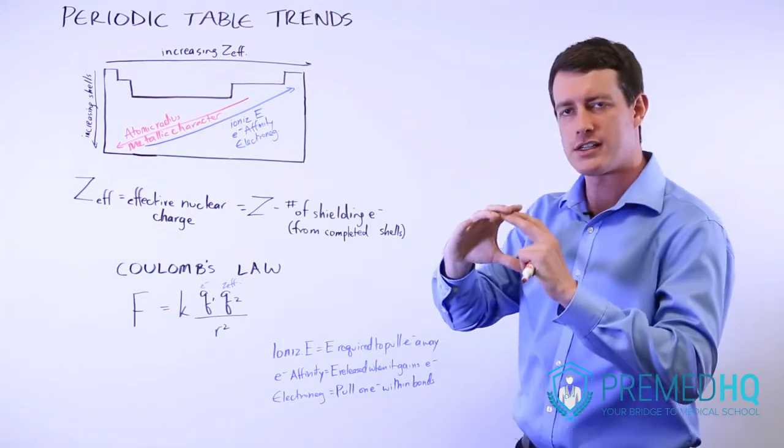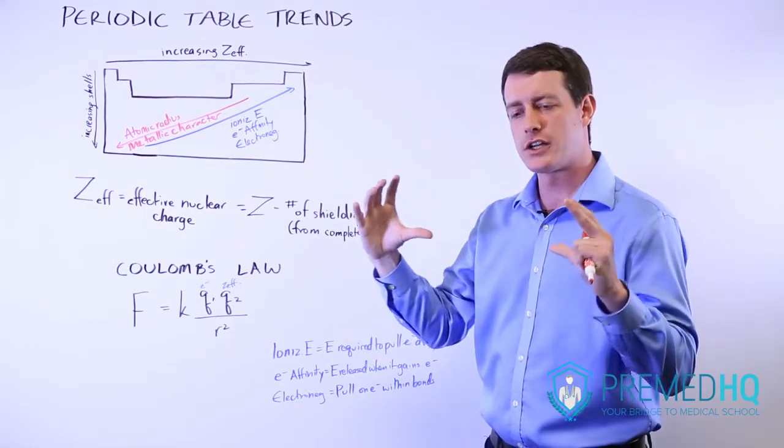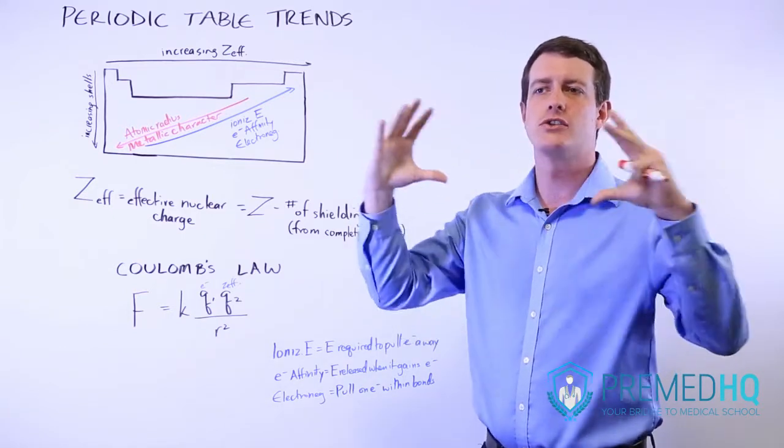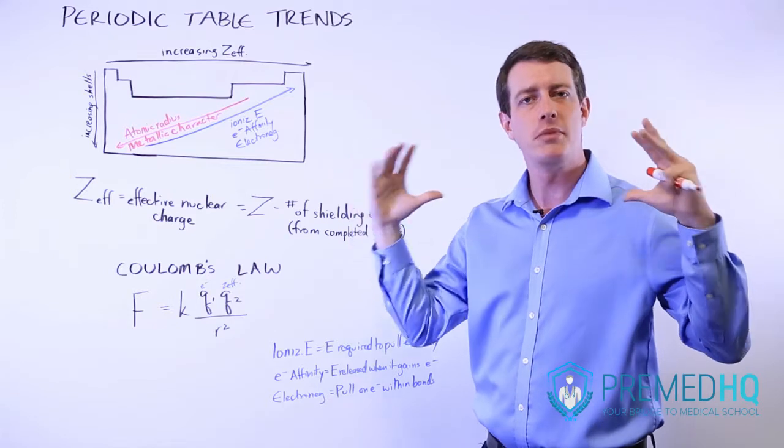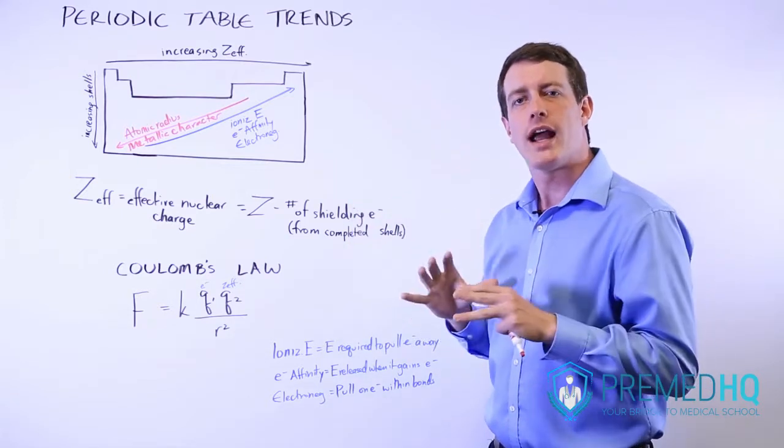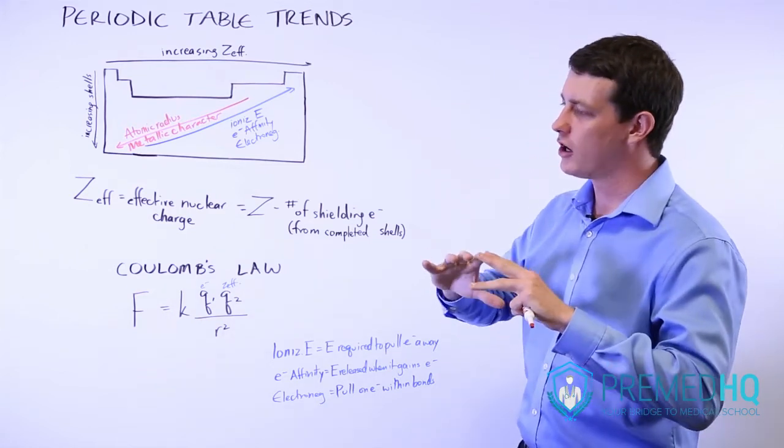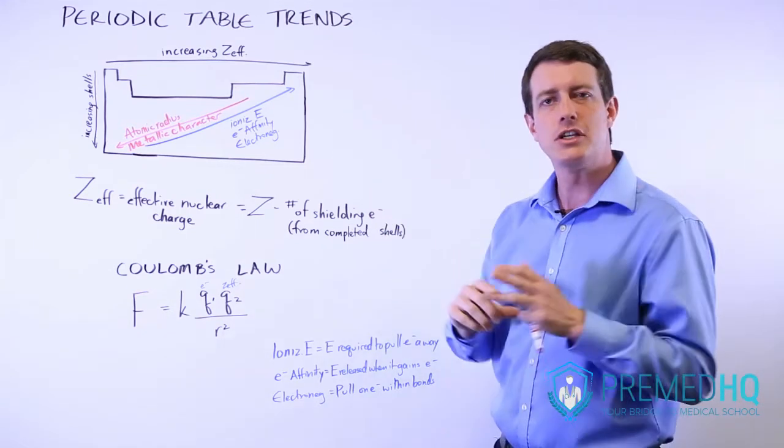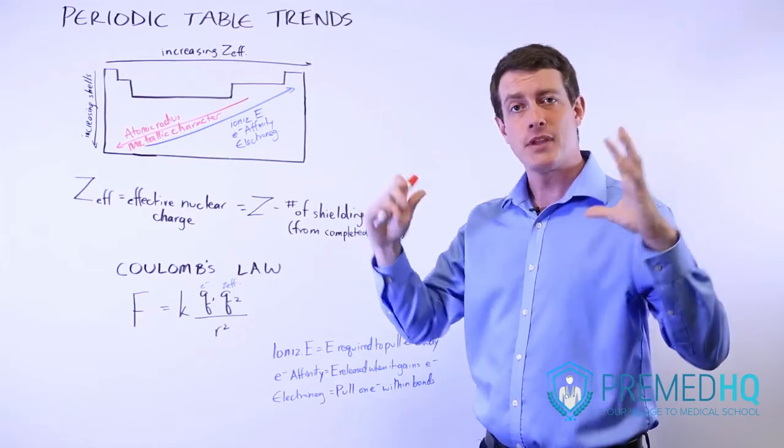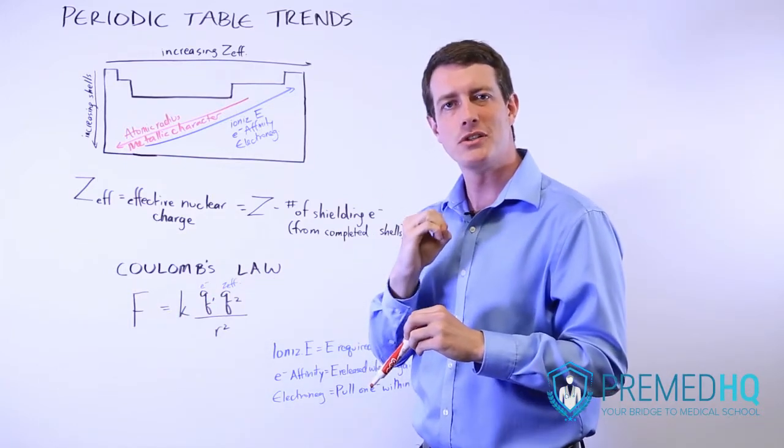But if you have electrons in the outermost shell and you're trying to figure out whether those electrons are being pulled in to a great degree or whether they are sort of floating a bit further out because they're not being pulled as much, then what happens is you essentially are going to find that the electrons are going to be repelled from each other and make the radius of the atom greater if the force coming from that positively charged nucleus is smaller.